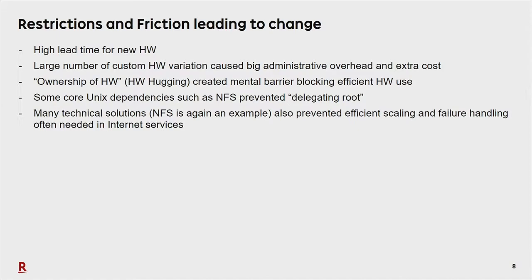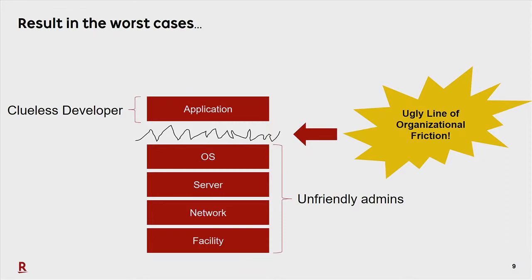We had some architectural problems in Unix, and the result was that many teams had massive friction between the people doing OS, servers, network and facilities, and the people trying to do applications. Some teams worked fine, but in other teams people gave up and just outsourced the whole thing to someone else. That was the reality.